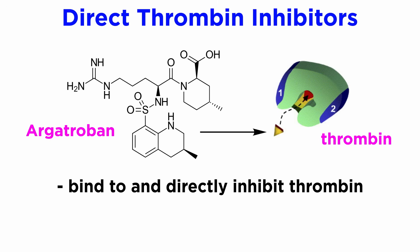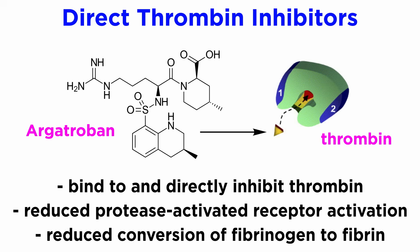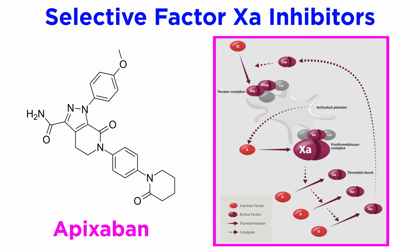Direct thrombin inhibitors, such as argatroban, bind directly to thrombin and inhibit its activity, predictably leading to reduced protease-activated receptor activation on platelets and reduced conversion of fibrinogen to fibrin, leading to anticoagulation. Drugs in this class cause significant anticoagulation but are also helpful in changing anticoagulant treatment if heparin is causing thrombocytopenia — meaning reduced platelet count — a known side effect.